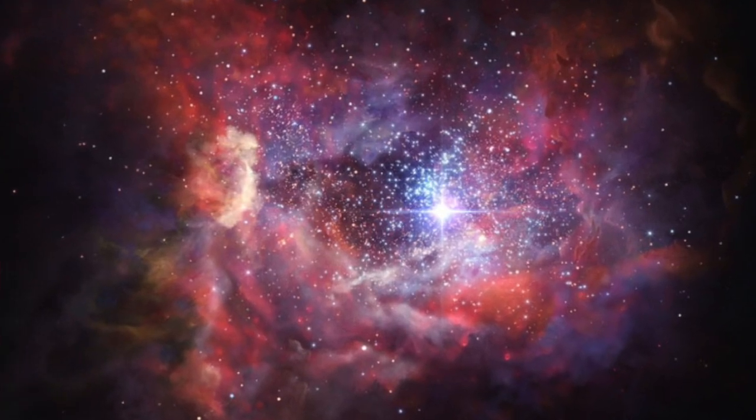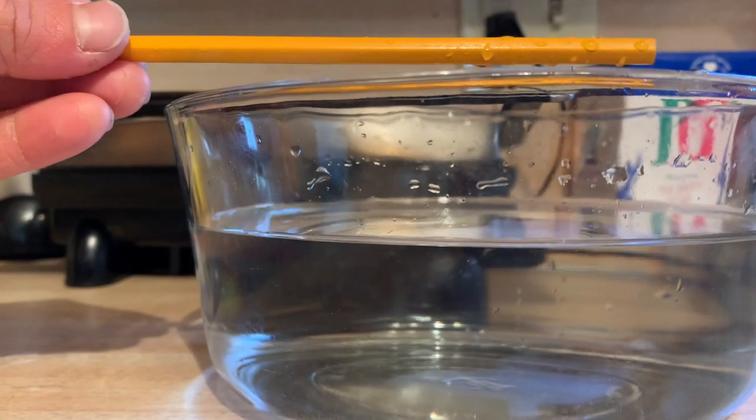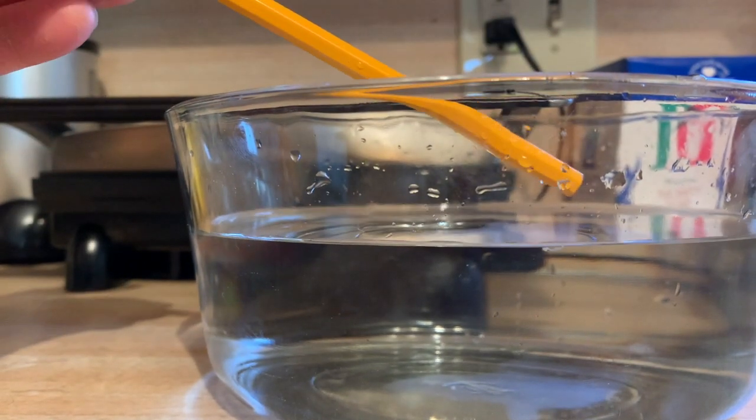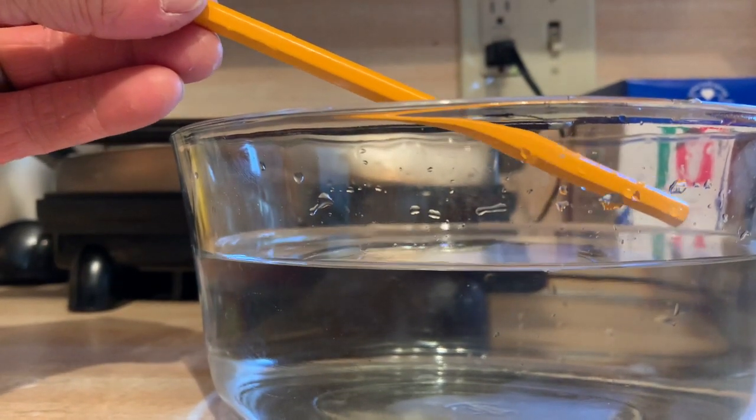When a light wave is traveling through the air and then it hits another material, something peculiar happens. The light waves bend. This bending is called refraction. Look at this pencil when it enters the water. While it's outside of the water, the light waves bounce off the entire pencil the same way.